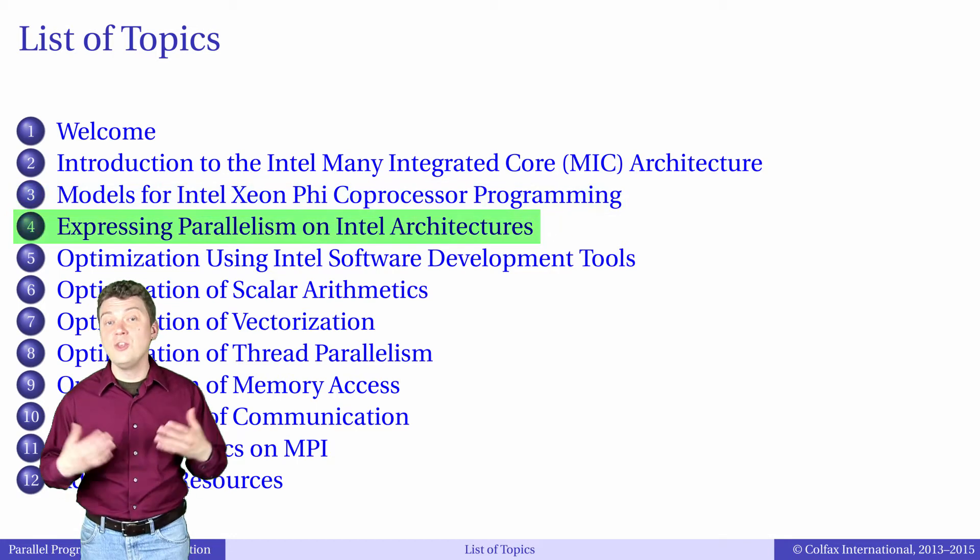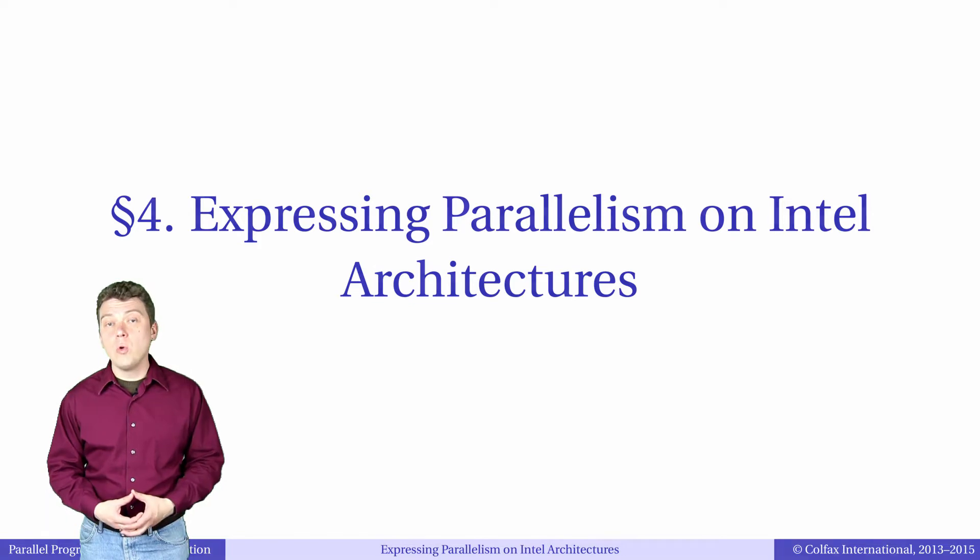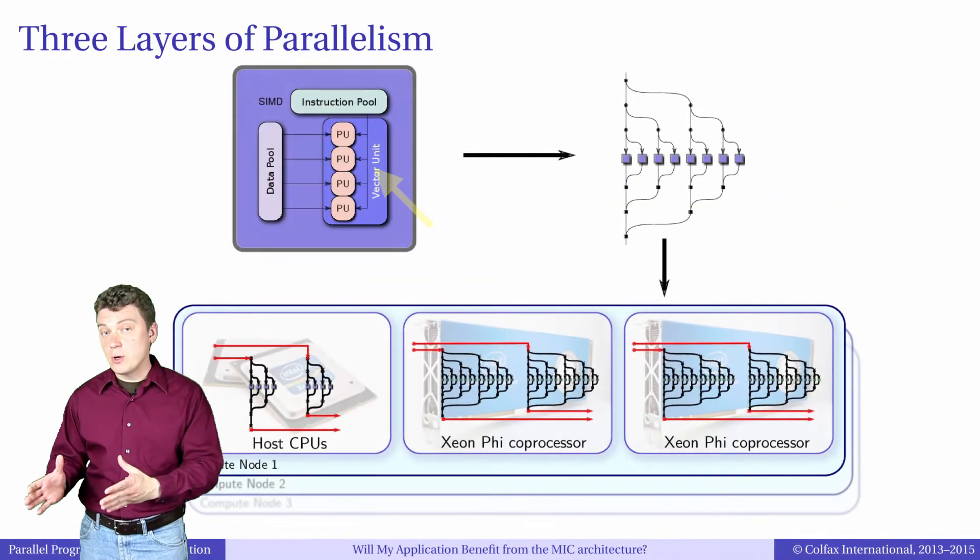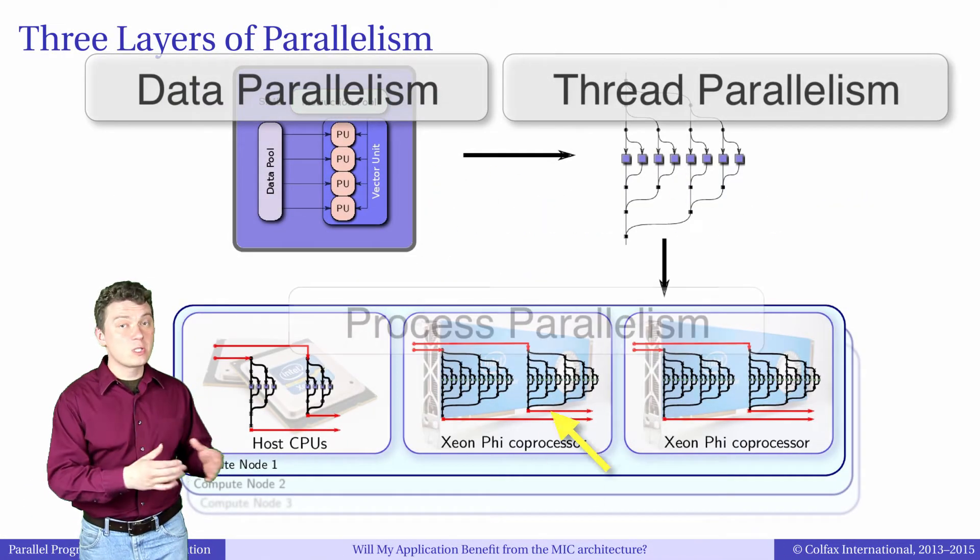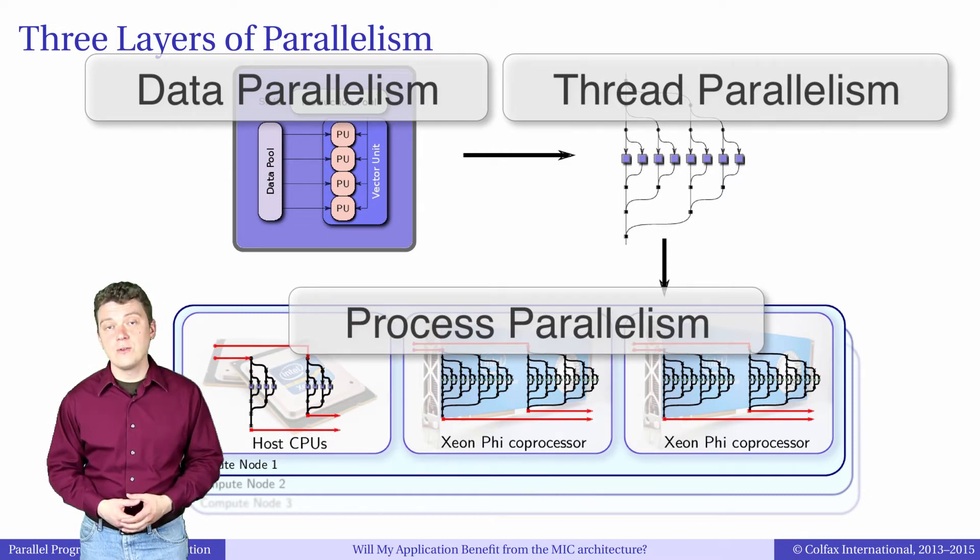Now we're beginning a new chapter titled Expressing Parallelism. In this chapter our goal is to learn how to express data parallelism, thread parallelism, and process parallelism in applications for Intel Xeon processors and Xeon Phi processors.